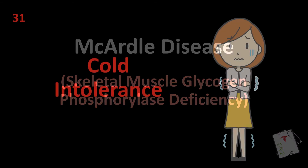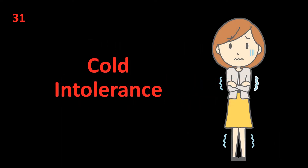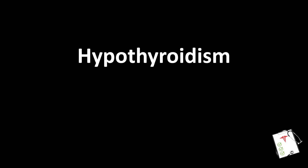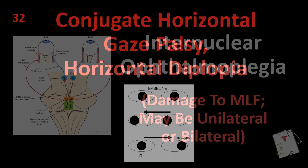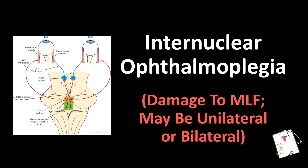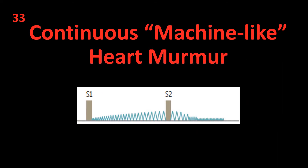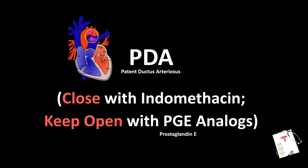Number 31 (continued): Cold intolerance. Answer: Hypothyroidism. Number 32: Conjugate horizontal gaze palsy, horizontal diplopia. Answer: Internuclear ophthalmoplegia — damage to MLF, may be unilateral or bilateral. Number 33: Continuous machine-like heart murmur. Answer: Patent ductus arteriosus — closed with indomethacin, kept open with prostaglandin E analogues.